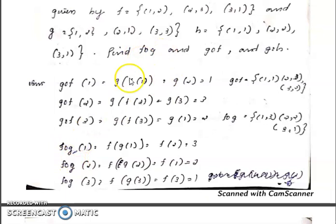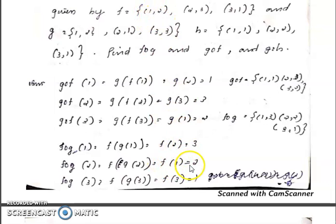Similarly, F∘G(1) = F(G(1)). G(1) = 2, so F(2) = 3. Answer is 3. F∘G(2) = F(G(2)). G(2) = 1, so F(1) = 2. Answer is 2. F∘G(3) = F(G(3)). G(3) = 3, so F(3) = 1. Answer is 1.